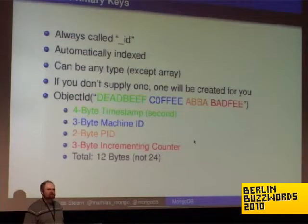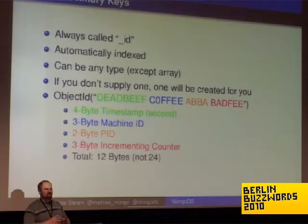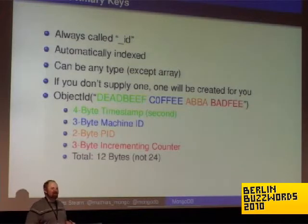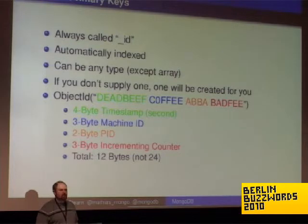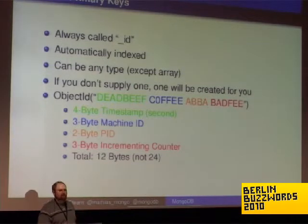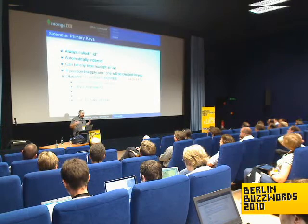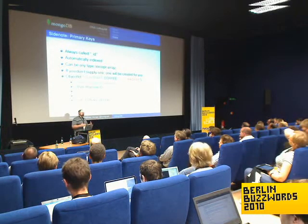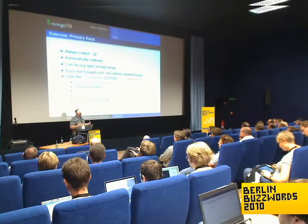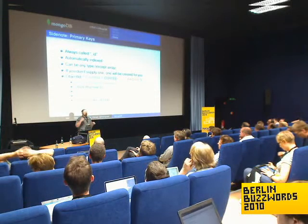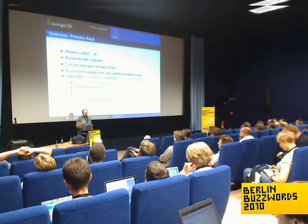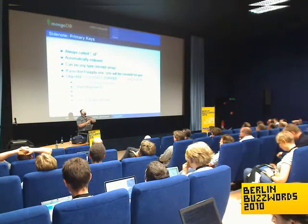Primary keys are always called underscore ID in Mongo. They're automatically indexed. They can be of any type except array, because you don't want multiple primary keys. You could have a binary primary key, or even an object as your primary key. If you don't supply an ID, we create one for you — before your object is sent over the wire, the client adds it. That way it can return the ID without a round trip: no need to insert and then ask for the last ID.